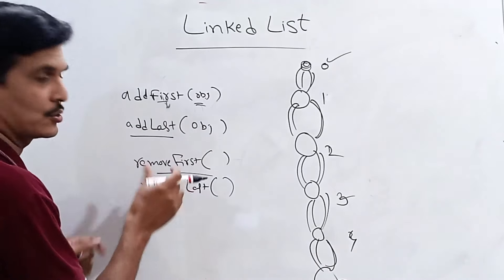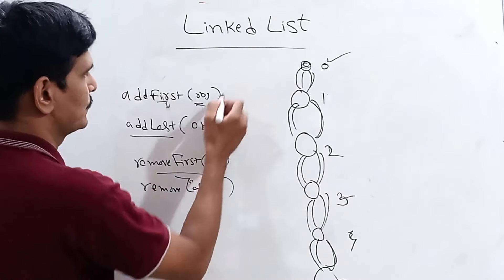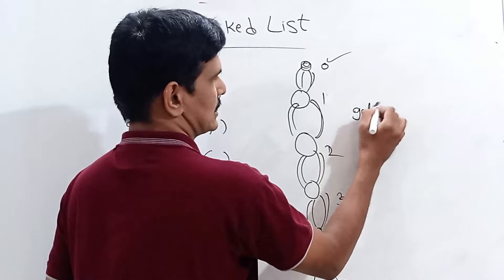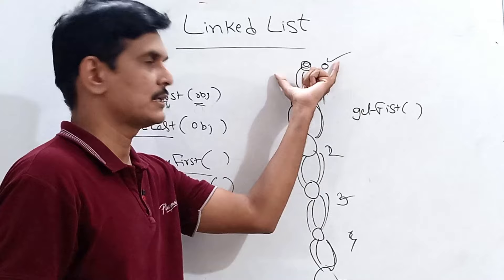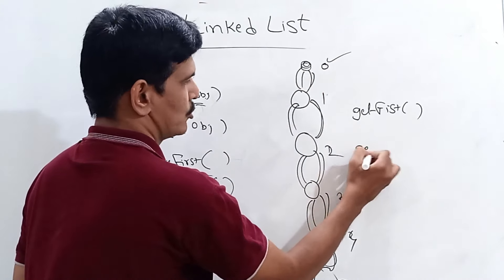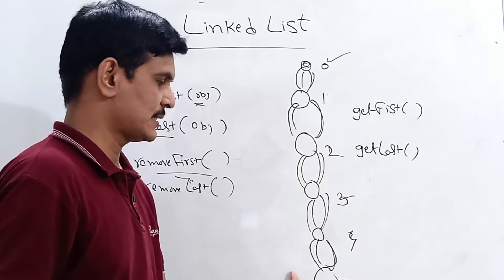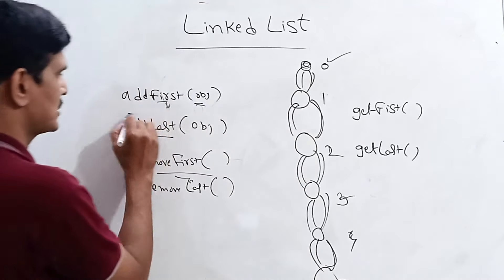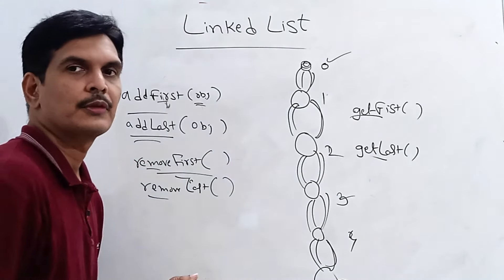After adding elements, print using System.out.println(L). Running this prints all the data — this is how we add data into the LinkedList. To find the size, use L.size() which returns how many nodes are present. Unlike ArrayList which has a default size of 10, LinkedList has no default size limit since elements are maintained as nodes internally.